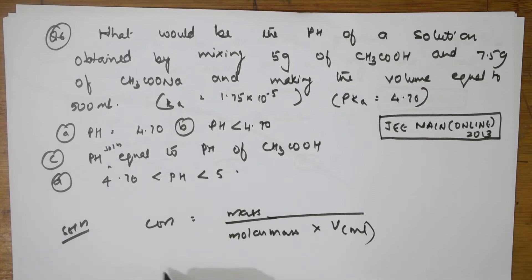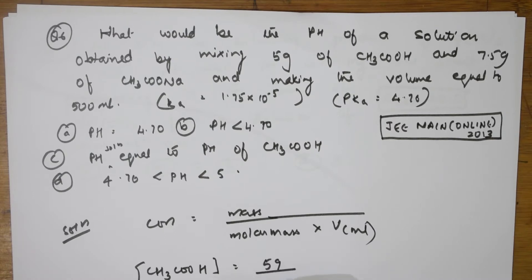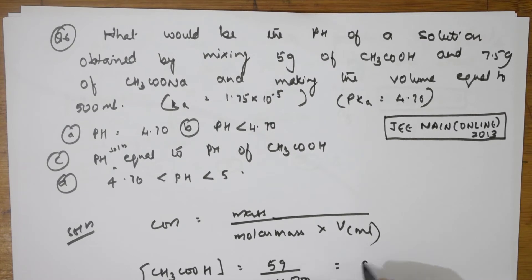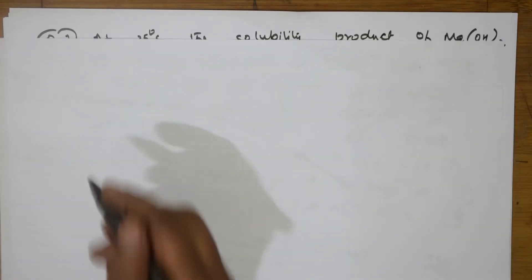Now, let us speak in terms of acetic acid. In acetic acid, how much is the concentration? Mass of this, you have given 5 grams of acetic acid. How much is the molar mass? 60. How much is the volume? They said, making the volume equal to 500 ml. When I solve this, I get 0.166 molar. Now, same thing let me find for sodium acetate.